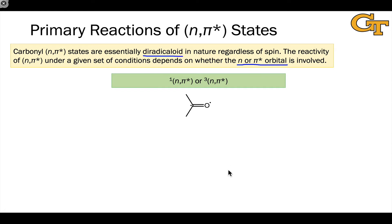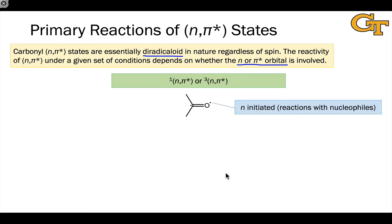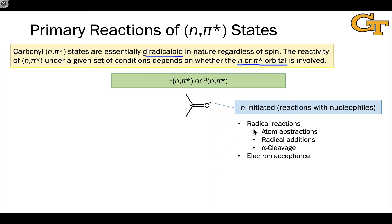For singlet or triplet n-pi* states, if we talk about n-initiated reactions involving reactions with nucleophiles — where the oxygen is acting as electrophile — we can think about radical reactions: atom abstractions of nucleophilic bonds, with C–H being the most important; radical addition reactions to nucleophilic pi systems such as enol ethers; and alpha cleavage reactions, where the sigma bond between the alpha carbon and the carbonyl carbon acts as a nucleophile. The n-orbital can also accept electrons in electron transfer reactions, particularly in the presence of strong electron donors such as amines.